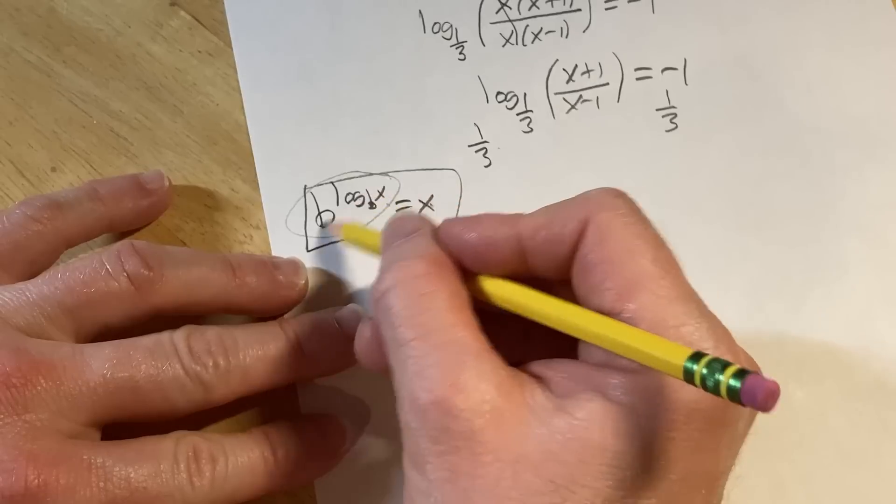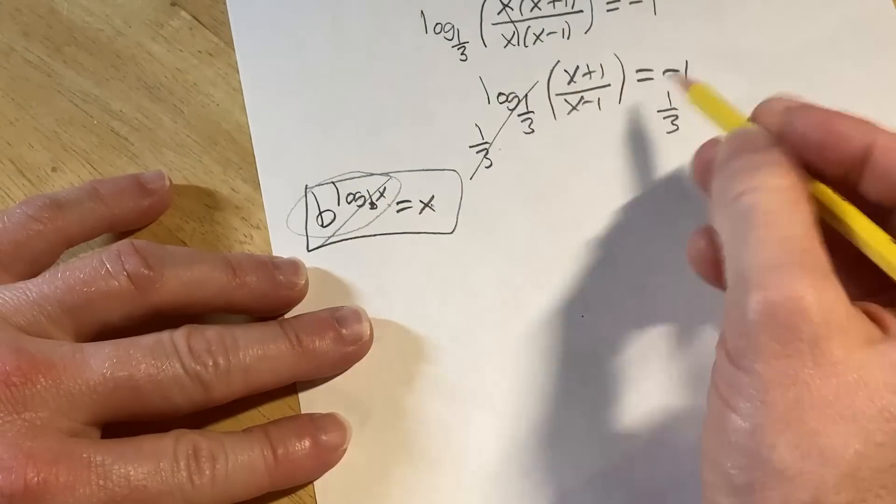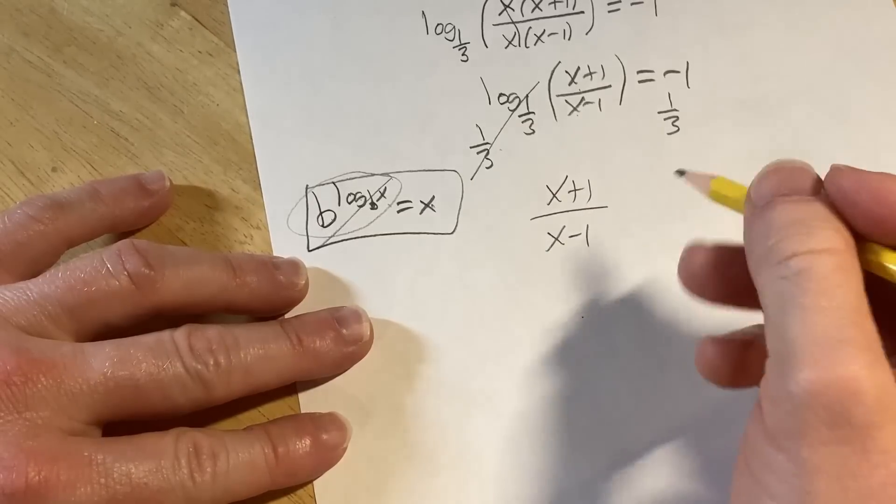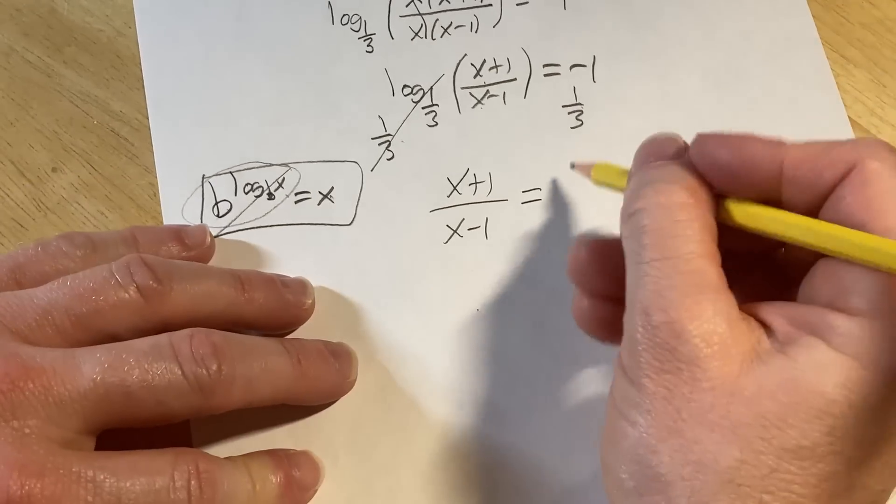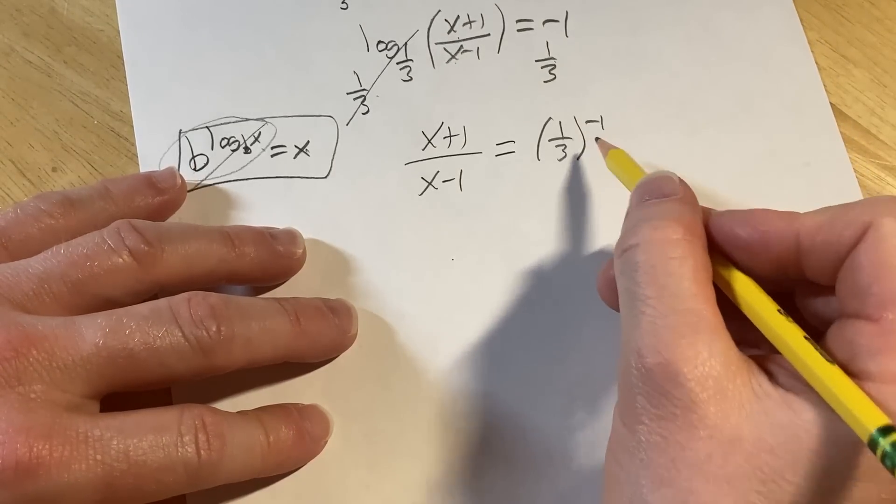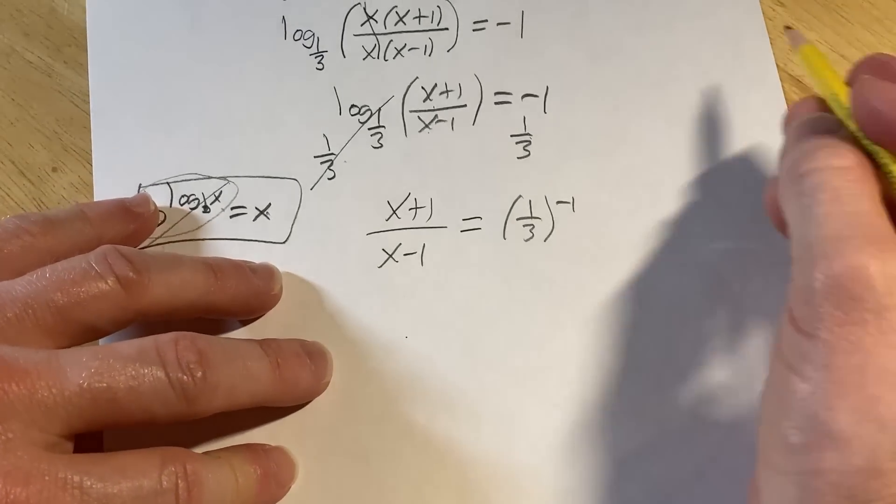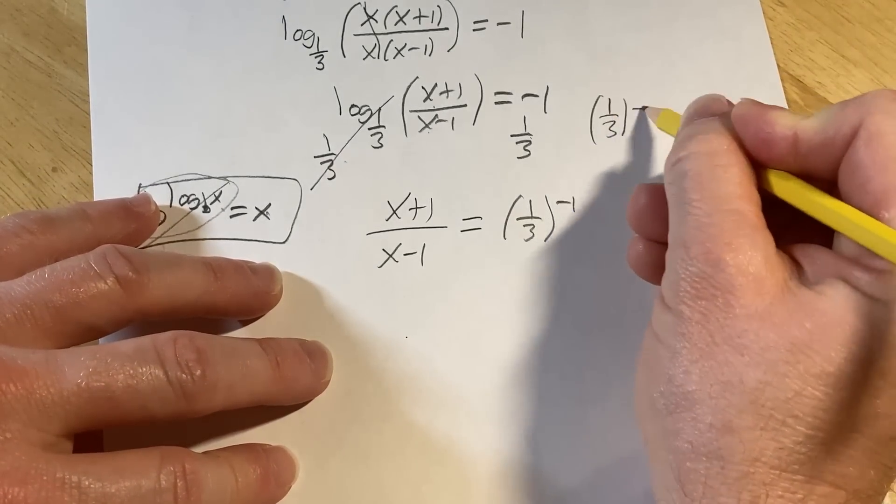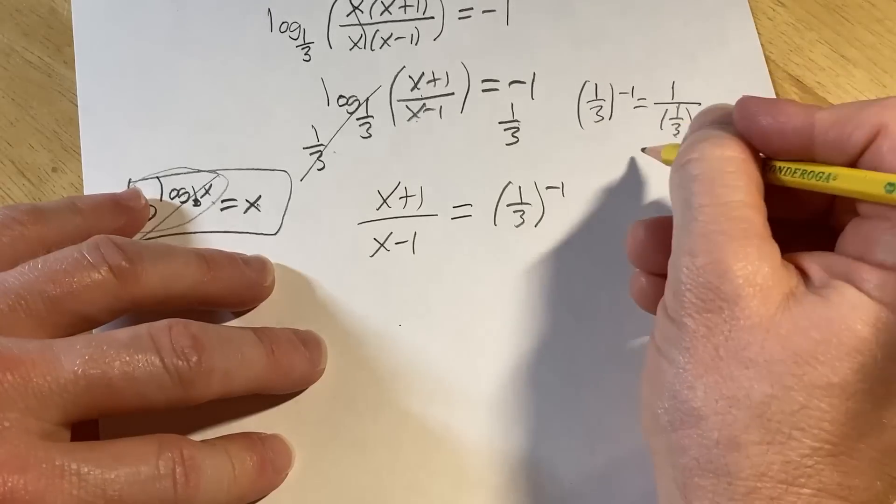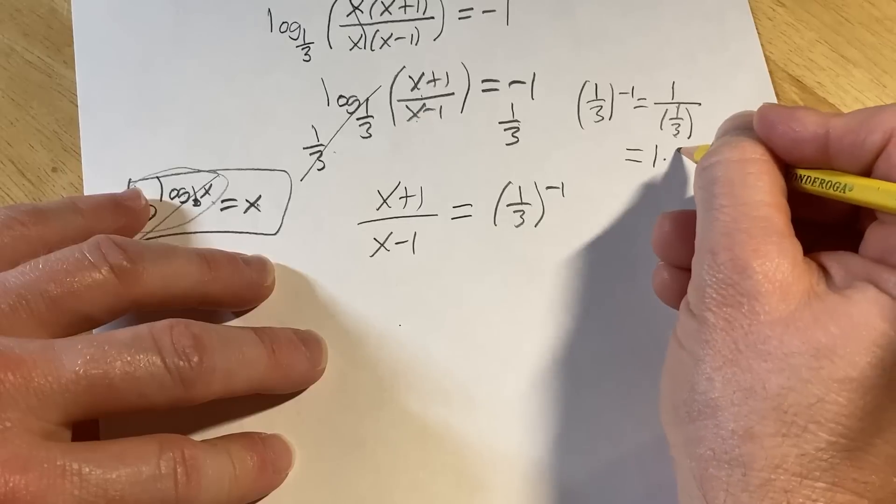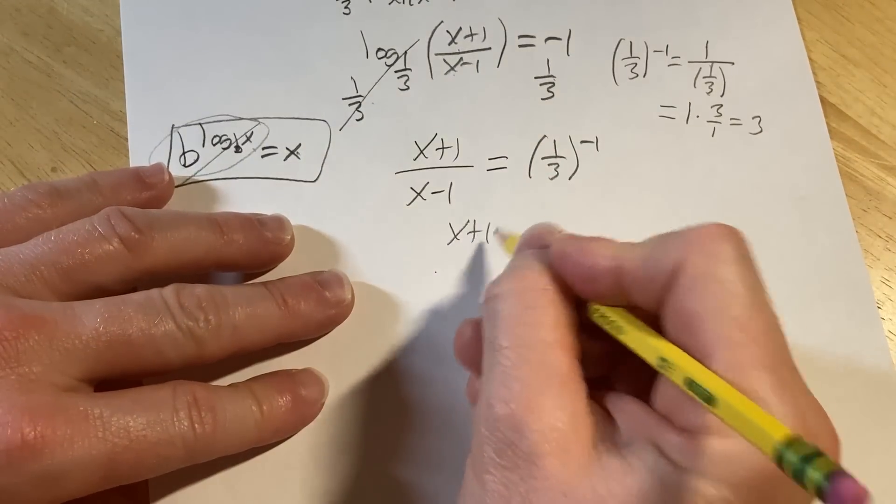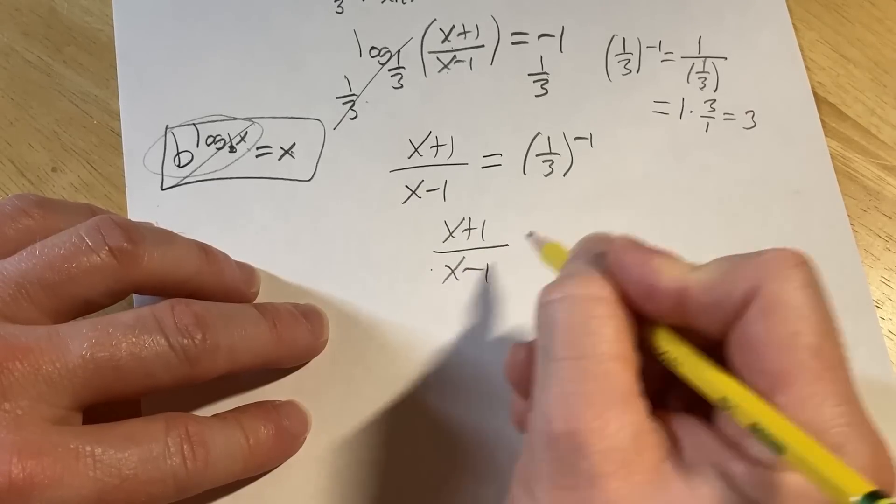So now, you see how the log here cancels with the b, basically? Same thing here. So you have x plus one over x minus one. So we exponentiated both sides. One-third to the negative one. Now, one-third to the negative one is just three, okay? If you don't understand that, I'll do it over here. There's a bunch of different ways to show it. One-third to the negative one is one over one-third. So that's one divided by one-third. When you divide, you multiply by the reciprocal. So it's one times three over one, which is just three. So we have x plus one over x minus one equals three.